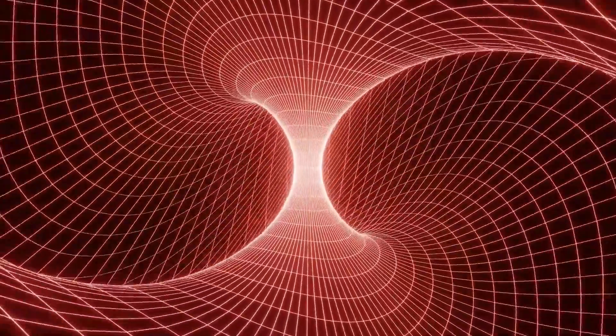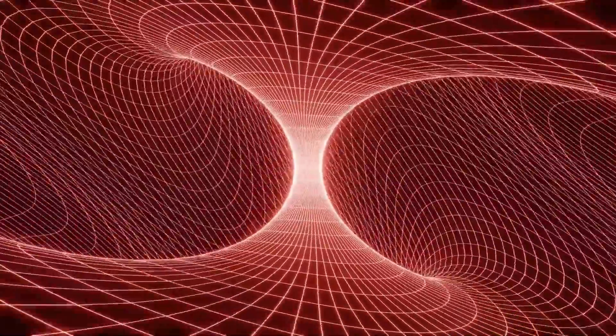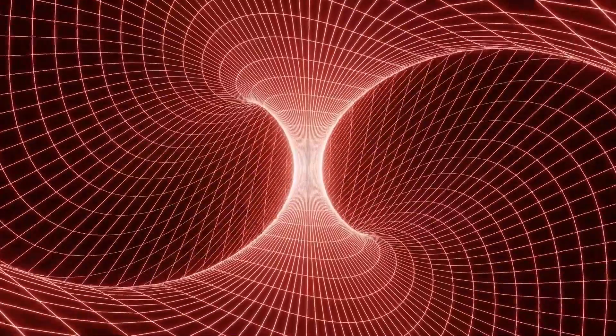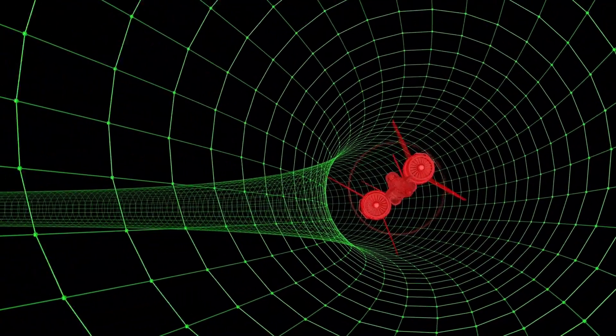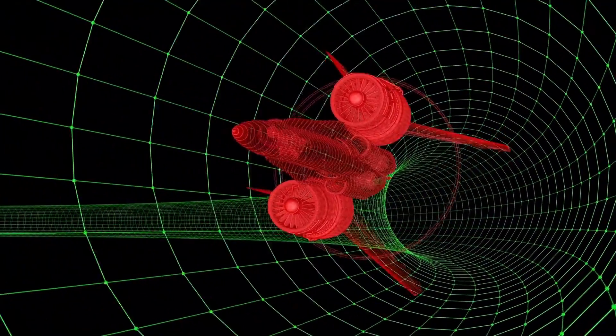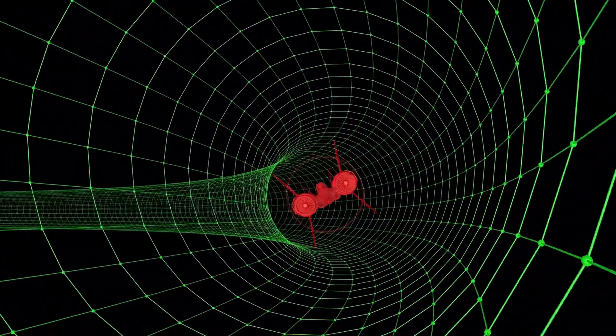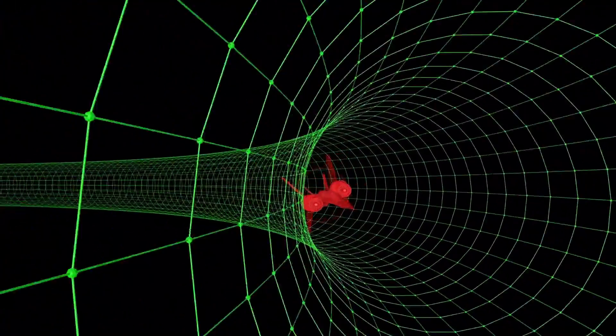While we lack a perfect quantum gravity theory, attempts such as string theory and loop quantum gravity suggest that space and time are emergent properties. They may be akin to waves on an ocean, where what we perceive as space and time results from deeper quantum processes. One thing is certain.